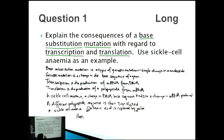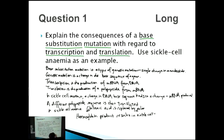The hemoglobin produced results in sickle cells. Usually red blood cells are nice biconcave donut shapes, but sickle cells under the microscope look like a moon shape. This is bad because the result is that sickle cells carry less oxygen.